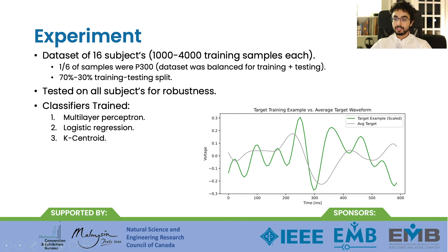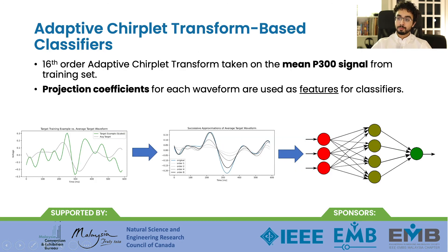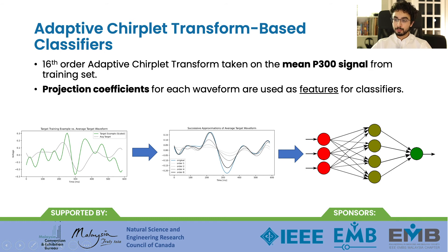Three classifiers were trained with each method. For baseline tests, the conventional downsampling methodology was used, with eight-dimensional downsampled feature vectors directly input into the classifiers. For the Adaptive Chirplet Transform-based classifiers, the mean P300 waveform was calculated from the training dataset and the Adaptive Chirplet Transform was applied to it. Each resulting chirplet in the approximation was projected onto every input waveform to determine projection coefficients, and those projection coefficient feature vectors were directly input to the classifiers.